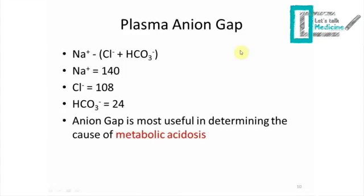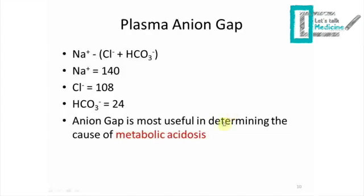Now we'll explain the anion gap, which is very important when discussing metabolic acidosis. In our body, anions equal cations. In this equation we use sodium to represent cations, and chloride plus bicarbonate to represent anions. Using the formula: sodium minus (chloride plus bicarbonate) — for example, 140 minus (108 plus 24) equals 8. The normal anion gap is 8 to 12.